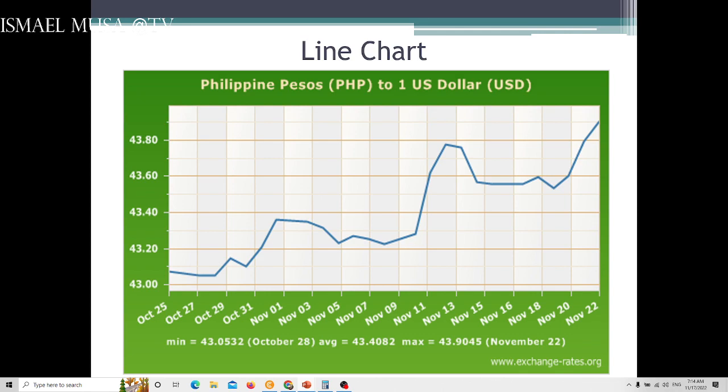A line chart, as I said, will show fluctuation, a trend. This is Philippine Peso to U.S. Dollar for a month of October 25 to November 22. Obtained from www.exchangerate.org. You see, using the line chart, you can really see the change of the heights and the fluctuation as the days go on.